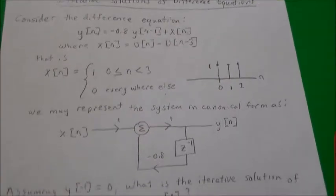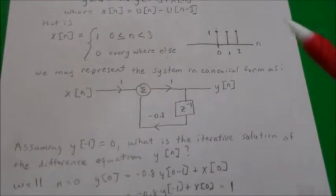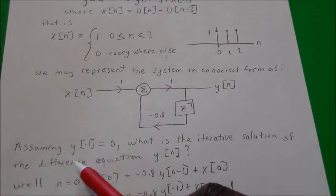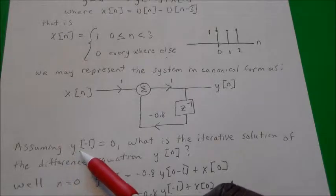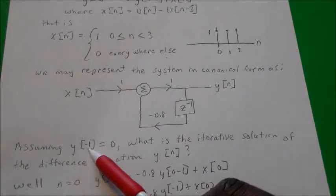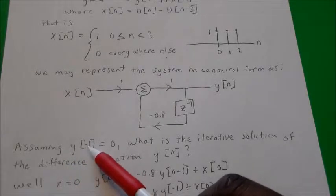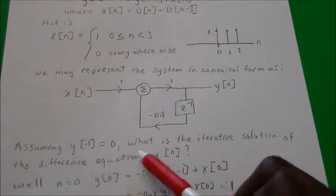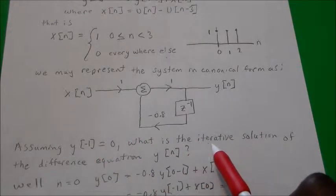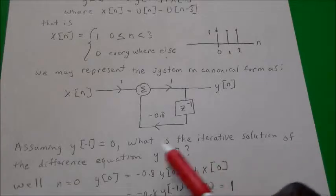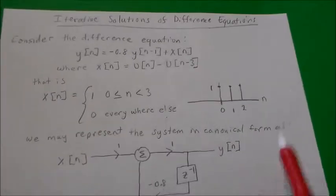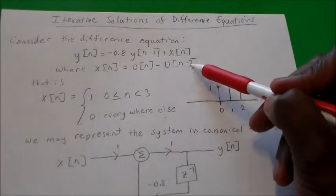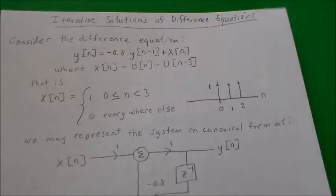What we wanted to find in this problem is the iterative solution, and we were asked to assume that y at time negative 1 is equal to 0. What is the iterative solution of the difference equation y of n, given that the input is the unit step minus the unit step delayed by three samples?